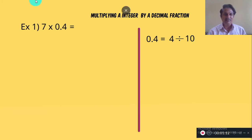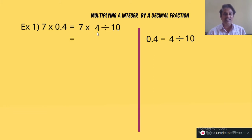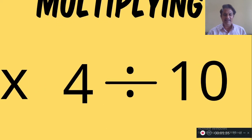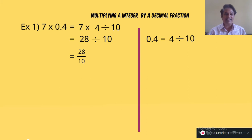Now we will multiply 4 divided by 10 by 7. So 7 into 4 is 28. So the answer is 28 divided by 10. Now, 28 divided by 10 — if you divide by 10, you will get one decimal place in the decimal part, and the number in the numerator gives the answer.